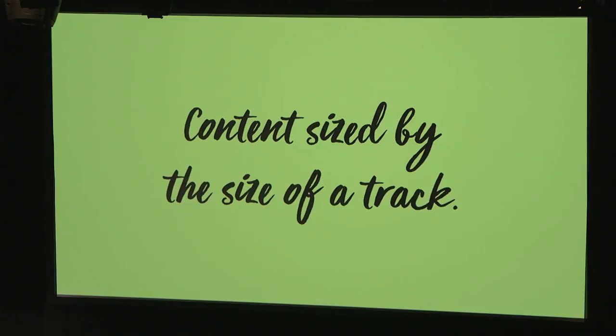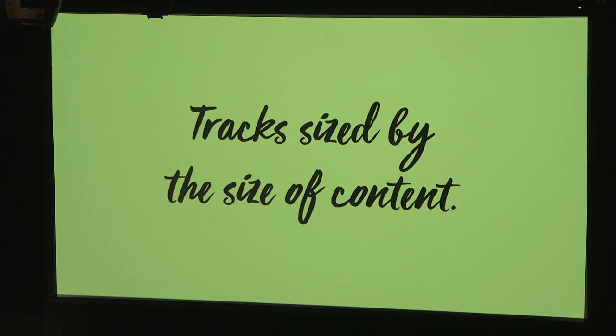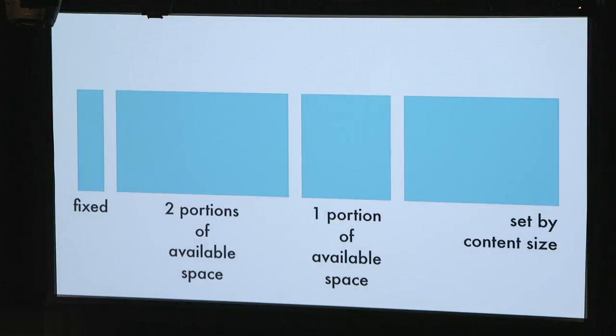We also have the option where content is sized by the size of the track — that's how we've been doing it in responsive design, where a column is 20% of the available space and the content inside refits itself. But we can also do it the other way around: the tracks themselves take their size from the size of the content. And you can mix those things together. So the first column is fixed width, then two more columns where one gets two portions of available space and another gets one portion, and the last column is sized by its content — and the whole thing is responsive.